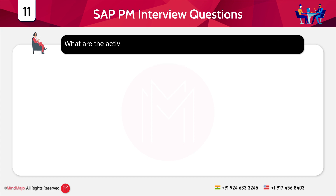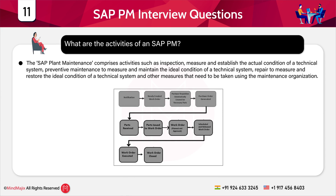What are the activities of SAP PM? SAP Plant Maintenance comprises activities such as: inspection to measure and establish actual condition of a technical system; preventive maintenance to measure and maintain the ideal condition; and repair to measure and restore the ideal condition. SAP PM is closely integrated with other modules such as SAP MM, Production, Sales and Distribution, Personnel Management, and Controlling. Processes necessary for PM and customer service are automatically triggered in other areas, for example a purchase requisition for non-stock material in Materials Management.